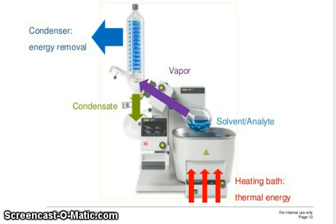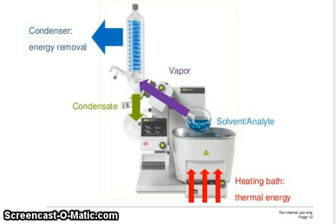Now, the condenser. This is condensation. The condenser performs energy removal. You can see the purple line — the solvent or analyte is going into the condenser where energy is removed. The vapor comes from the heating bath which provides thermal energy.